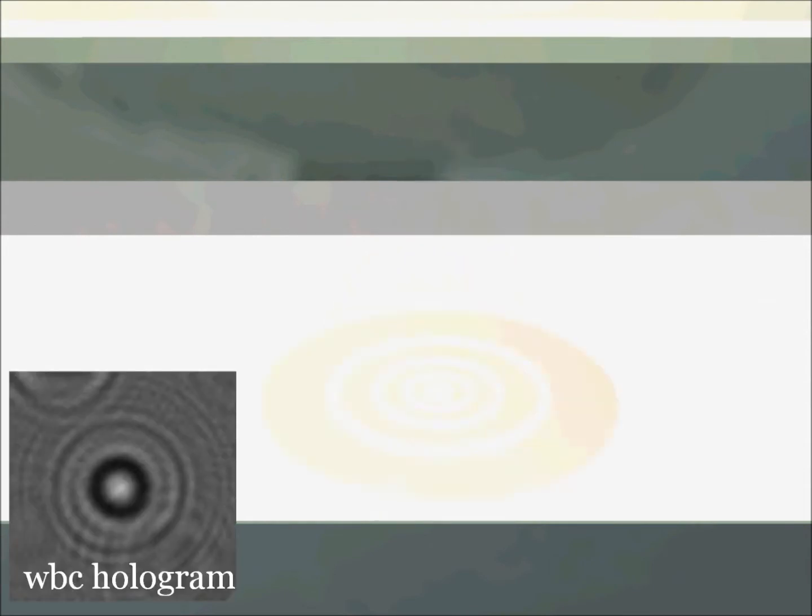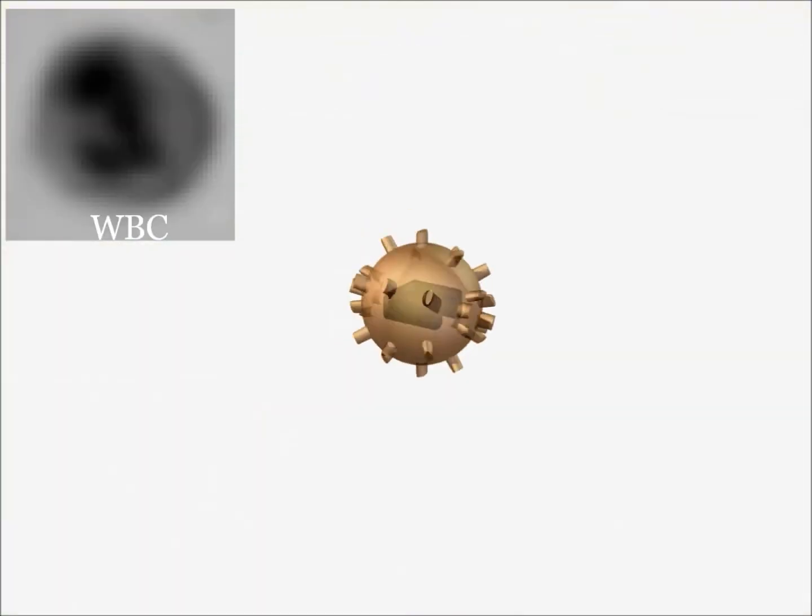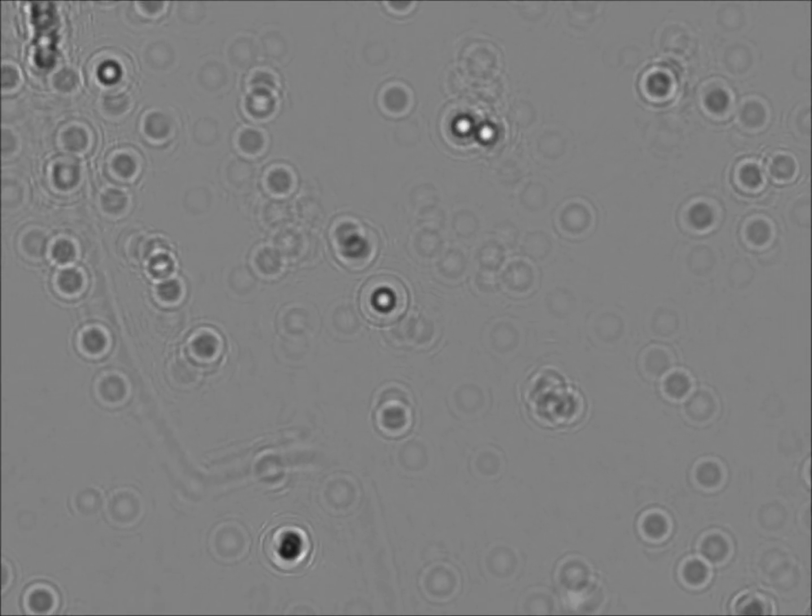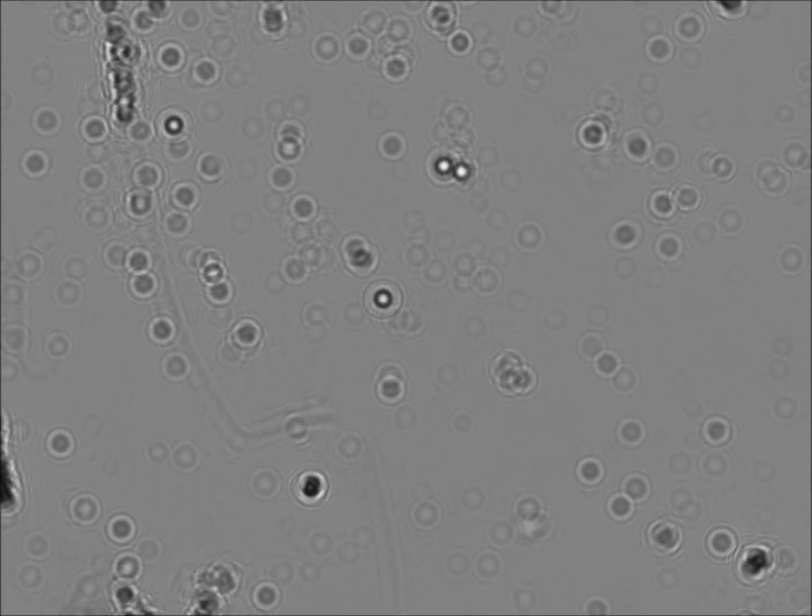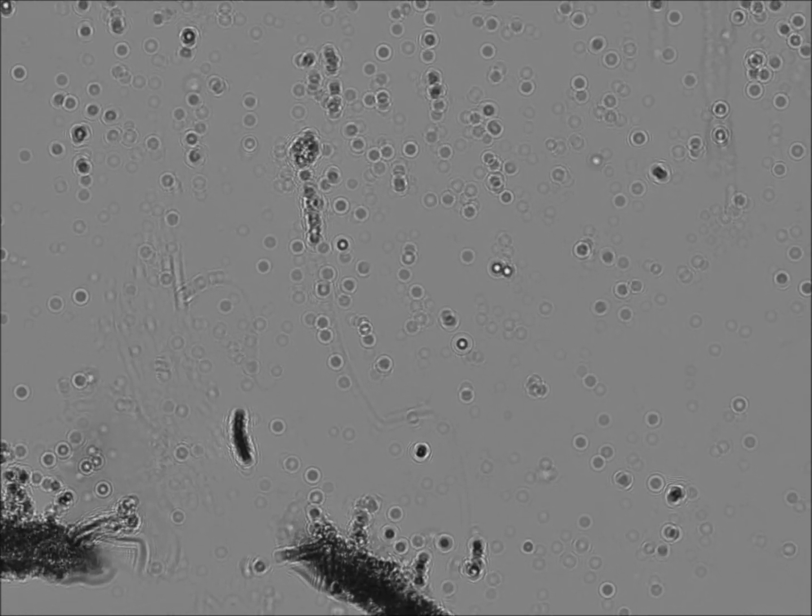For example, this is what our sensor records for a hologram of a white blood cell, and here's what it looks like after processing. One advantage of the way we do holography is that we can image thousands of cells in one shot.